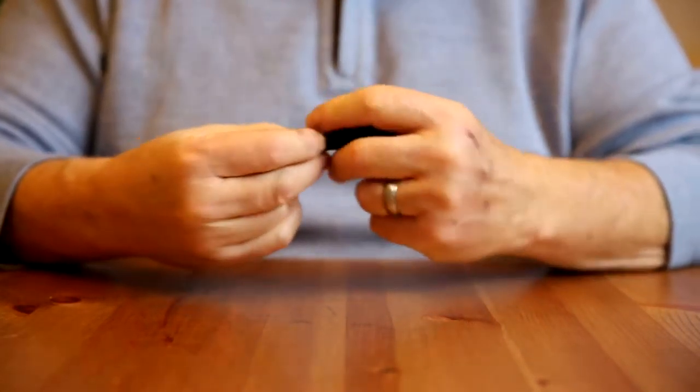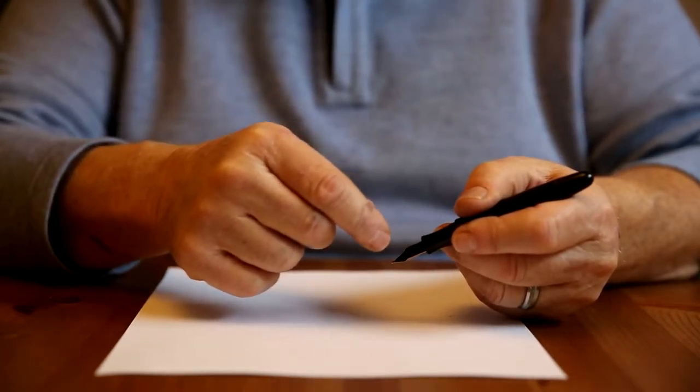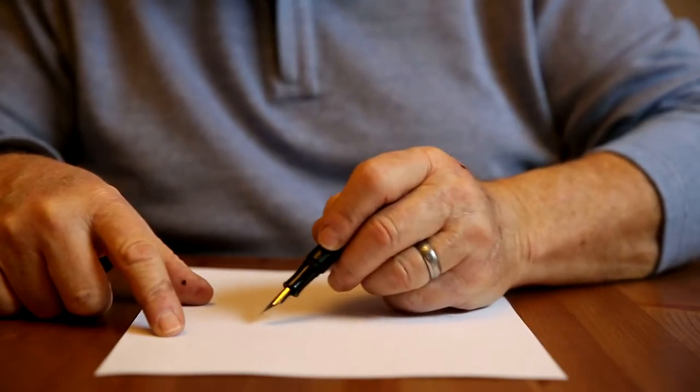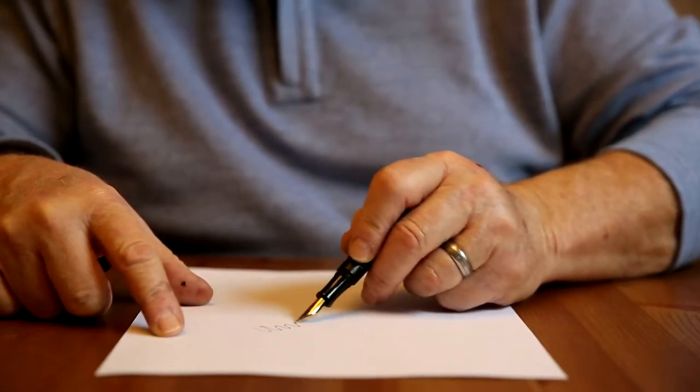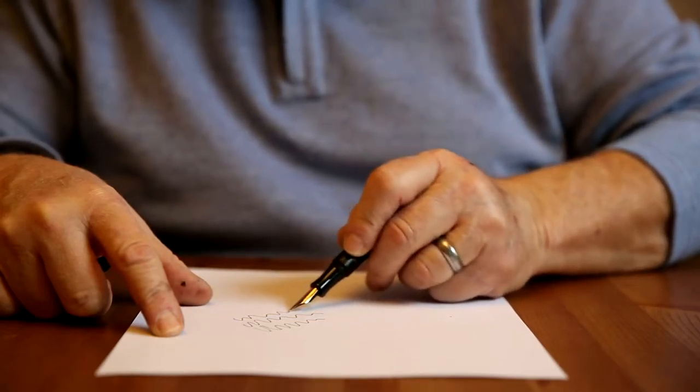Now, your pen may not begin writing immediately. You may have to run it for a second under cool water to moisten the feed, which is underneath the nib. But once water starts running through, you'll begin to get ink flowing into the pen.